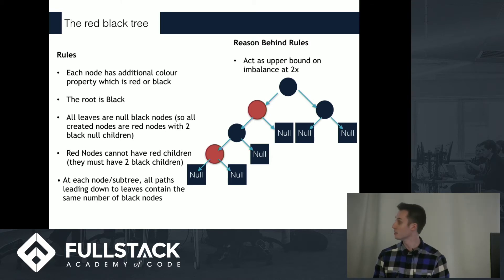This is actually the most imbalanced a red-black tree could possibly be if one branch has all black nodes, and the other branch, which has to have the same number of black nodes, goes black, red, black, red. So in a red-black tree, the longest branch of the tree can't be more than twice as long as the shortest branch. This helps a lot with search time.